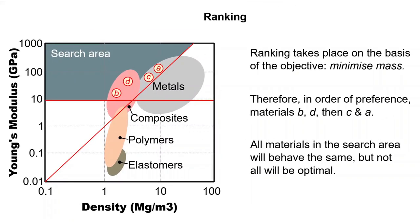We go back to our objective for ranking, which is the best choice. For the current example, this is to minimize mass. Therefore, on the basis of density, the best will be B followed by D, C, and then A.